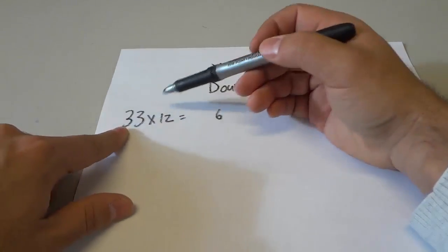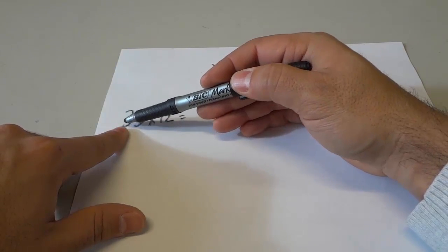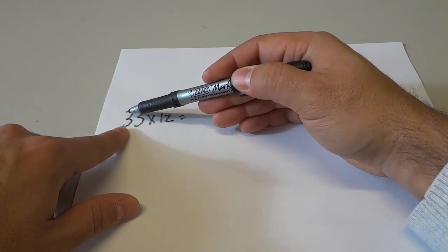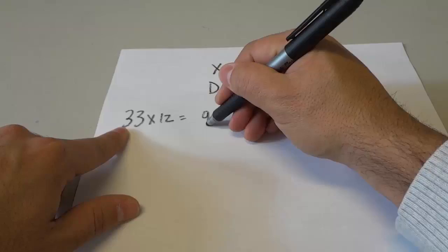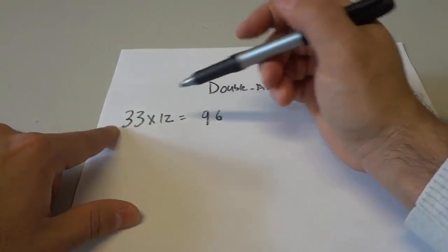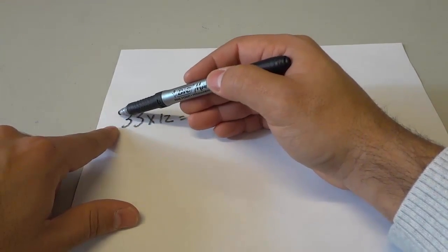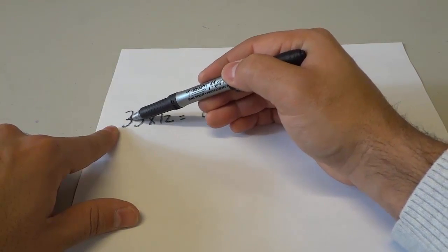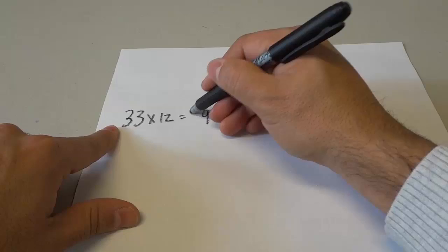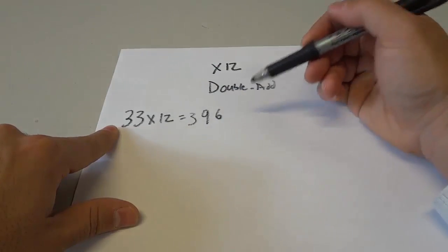Then we're going to go to the next number, which is another 3. If we double this number, which is double 3 is 6 and we add it to the neighbor, we add 3. That brings us to 9. Now we move to the next number. Now this is an imaginary 0. If we double 0, that gives us 0. And we add to the neighbor, which is 3. That gives us 3. We can just write that there. 396 is our final answer. Literally, it's that simple.